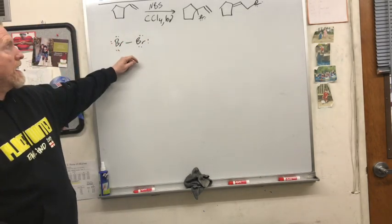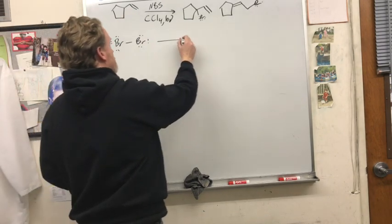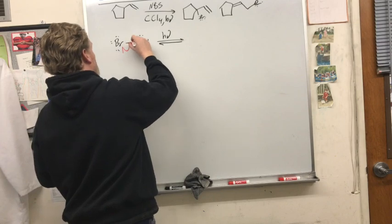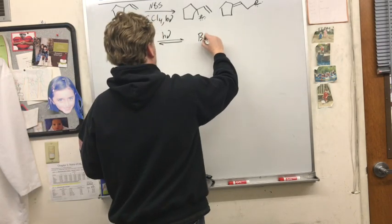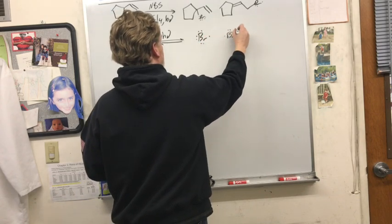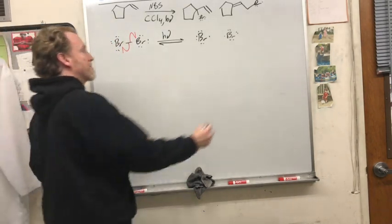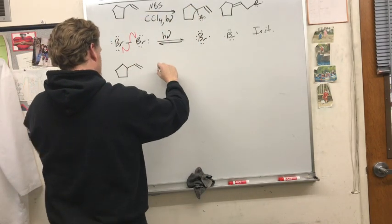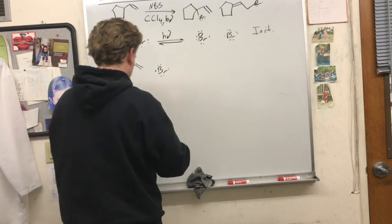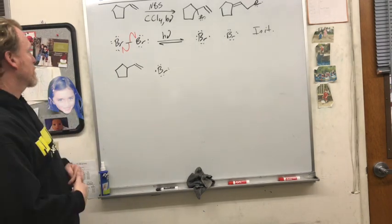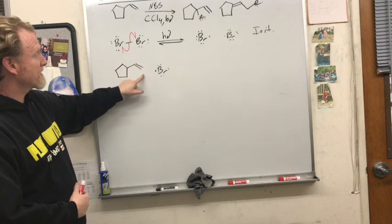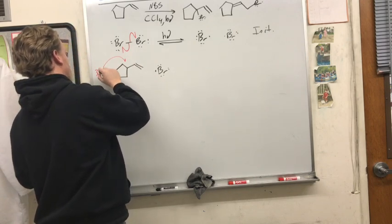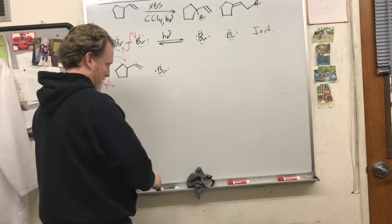So we have this low concentration of bromine, and before it runs into a pi bond it might get hit with a photon of light, breaking it apart. This is an initiation step — no radicals going to two radicals — we initiate the process. Then our alkene is going to react with it, and we want to make the most stable radical. We have some secondary carbons, some vinyl carbons, and a tertiary allylic carbon — that's where it's going to go: tertiary allylic.